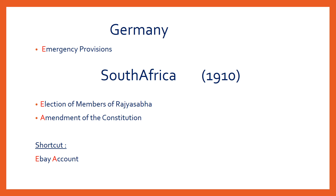The next one is South Africa. The features borrowed are: election of members of Rajya Sabha and the amendment of the constitution. The shortcut to remember these features is 'eBay account' — E in 'eBay' for election of members of Rajya Sabha, and A in 'account' for amendment of the constitution.